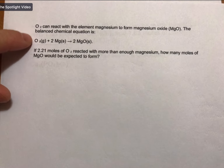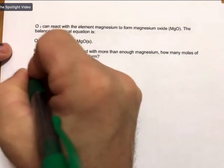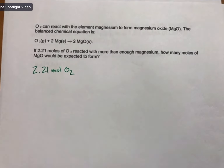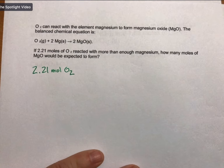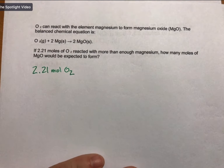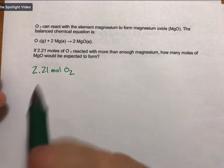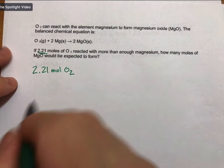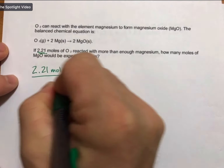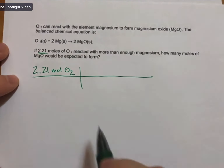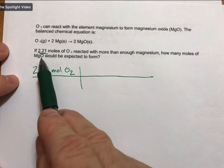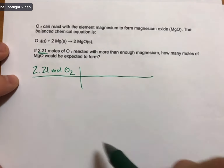So we have 2.21 moles of oxygen. The problems are going to have more and more numbers in them, but they always start with one of the numbers in the problem. My approach for solving this is: if I'm converting moles of oxygen to moles of magnesium oxide, I use the coefficients in the balanced reaction.